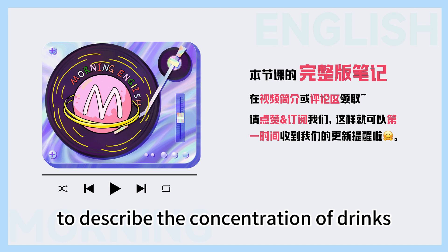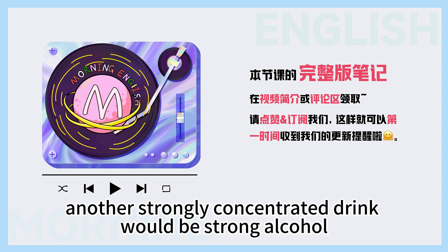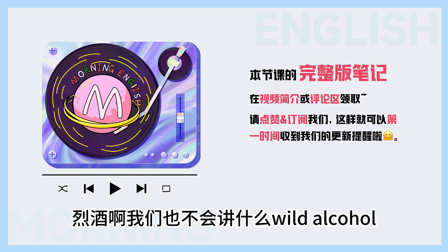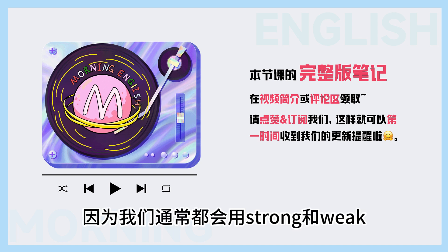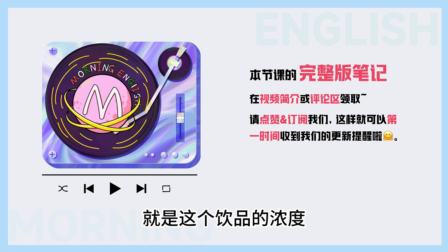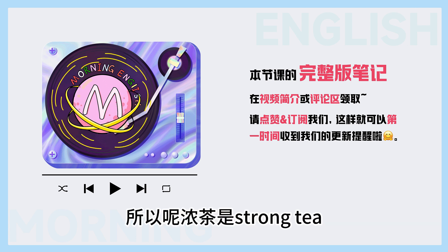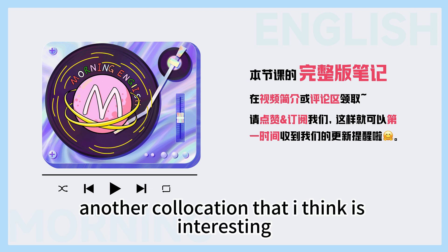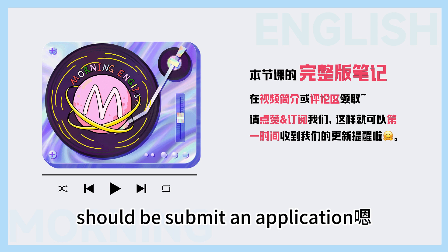We use strong and weak to describe the concentration of drinks. So strong tea means 浓茶, and weak tea means 淡茶. Another strongly concentrated drink would be strong alcohol — 烈酒也用strong，不会讲wild alcohol。Another collocation that's interesting: 'raise an application' should be 'submit an application.'